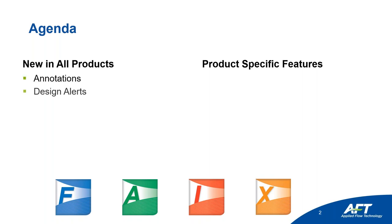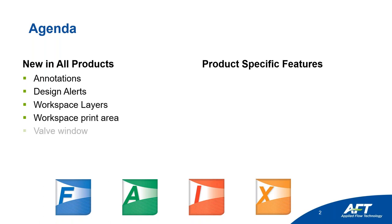We're going to go through annotation changes, design alerts, layers — which is really the big one — improved printing, new valve window, custom junction icons, and improved isometric drawing. These are features we've been working on for a while and we're excited to finally show you.